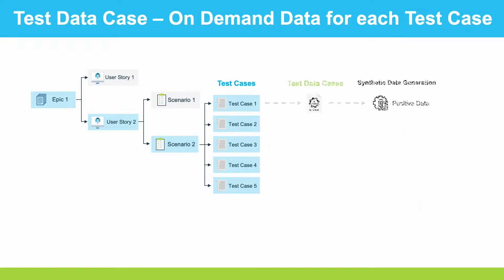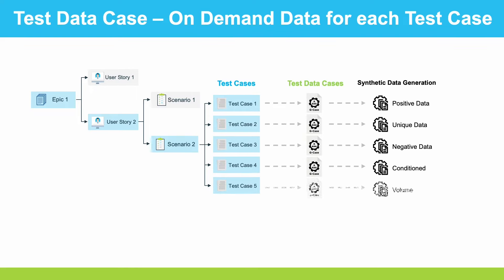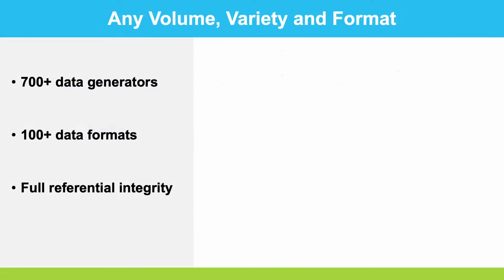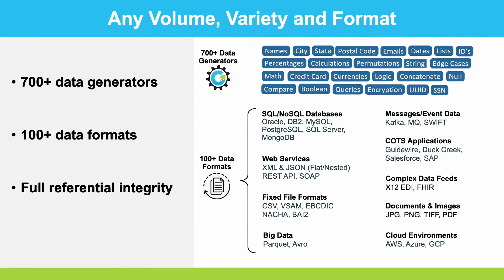The core concept is a test data case. A test data case provides on-demand data for each test case — whatever the data may be and whatever volume is necessary. We can provide any volume, variety, and format because we have over 700 data generators today, covering obvious values like names, city, states, and postal codes, but also calculations, percentages, and all kinds of other data variety.